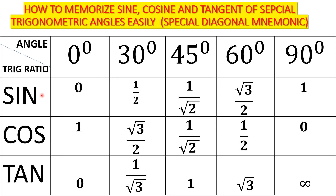So if you want to get sine 0, for example, you just look at the value here. Sine 30, for example, is one half. Sine 45 is 1 over root 2. Just like that.